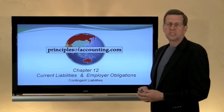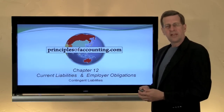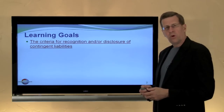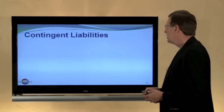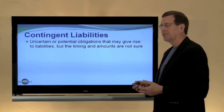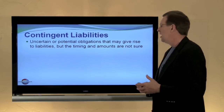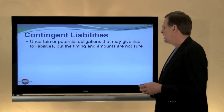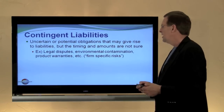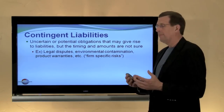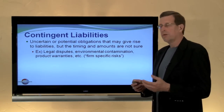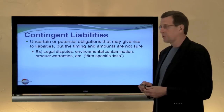I'm Larry Walther. This is PrinciplesOfAccounting.com Chapter 12, and in this module we will look at the accounting for contingent liabilities. Contingent liabilities are those obligations that are uncertain or potential. They may give rise to actual liabilities or they may not, and the timing and amounts are uncertain. Examples include legal disputes, environmental contamination problems, product warranty, and other firm-specific risks.